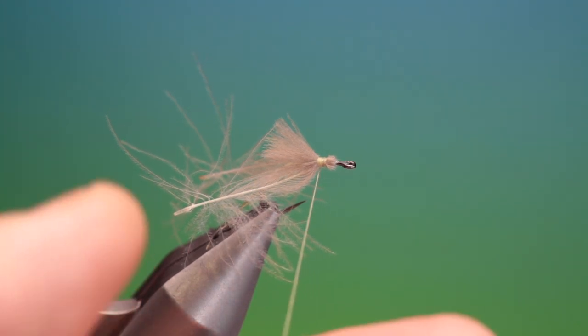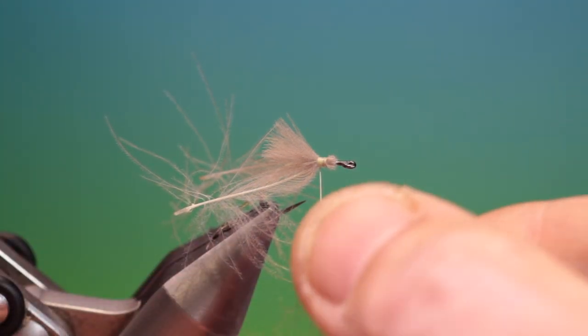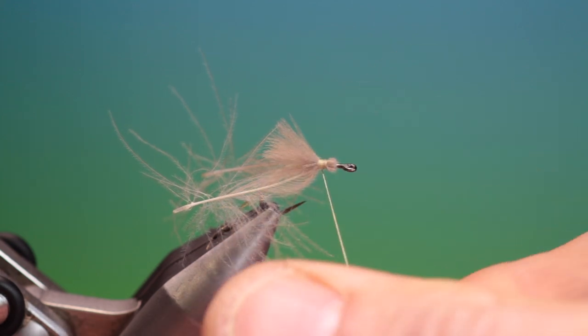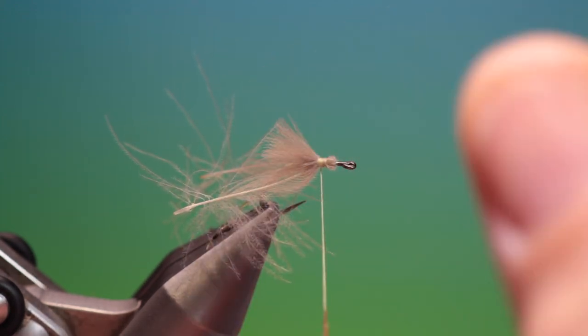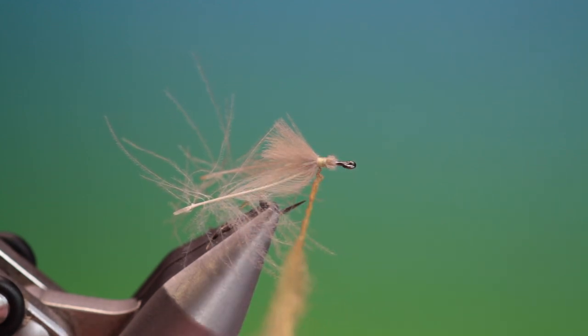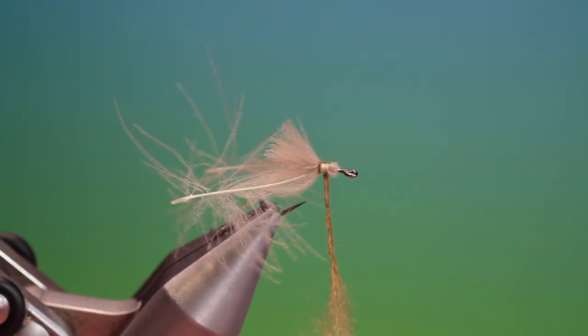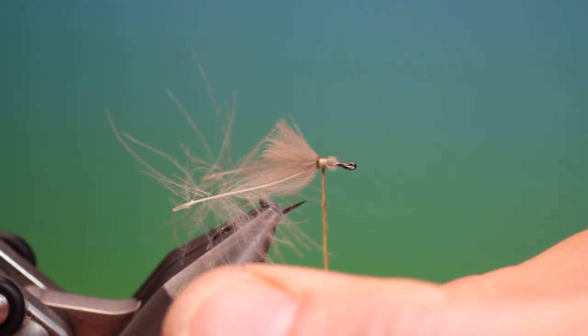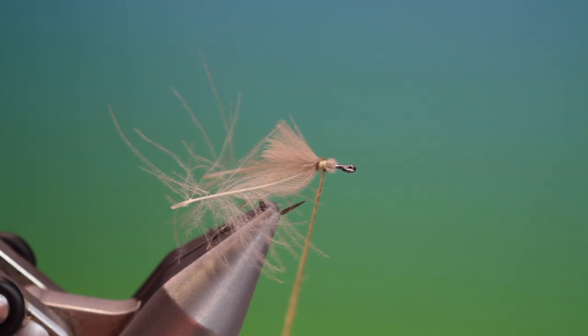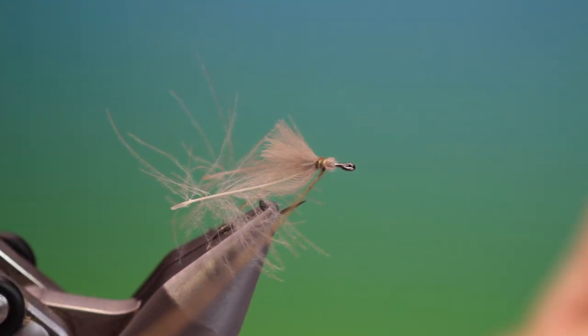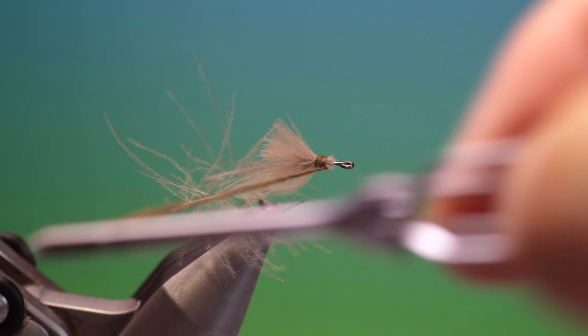So now I'm going to use a bit of brown olive dubbing for the thorax. We want to just tighten that in and slide that up, catch it in and then we'll tighten all this up.